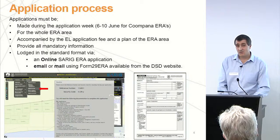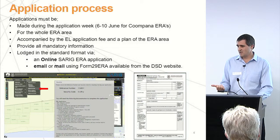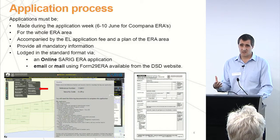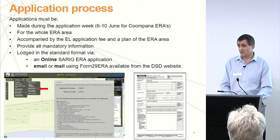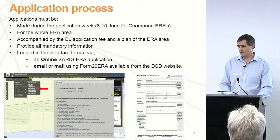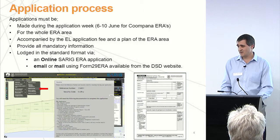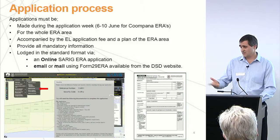In terms of the application process, there are a few important things you need to know. It has to be made during the application week. If you're applying online, you can only submit the application during that week, but you can actually start the application before that and save it leading up to that time. It has to be for the whole ERA area. The application must be accompanied by the fee and a plan of the area — if you're applying online, you just need to tick a box to validate that it's the correct area and provide all the mandatory information.